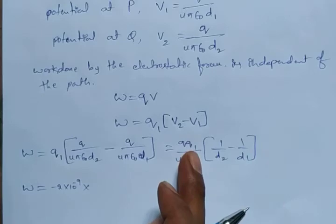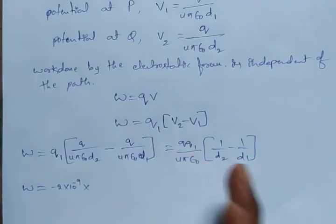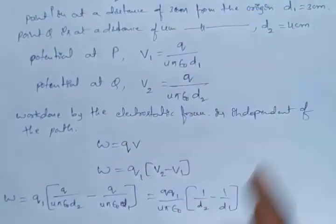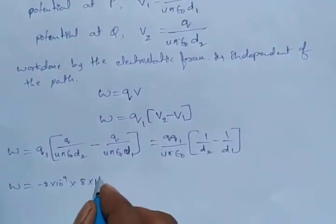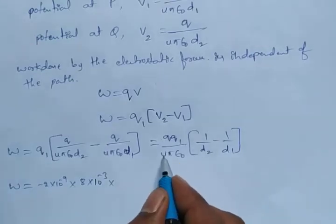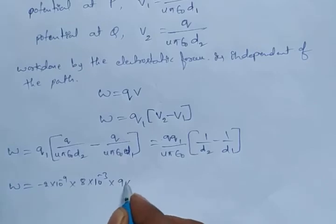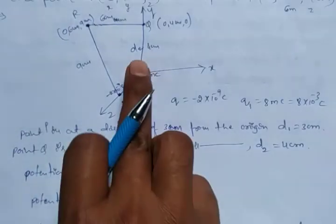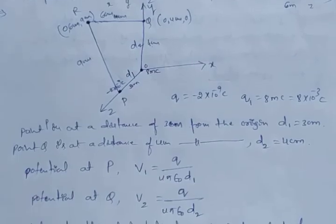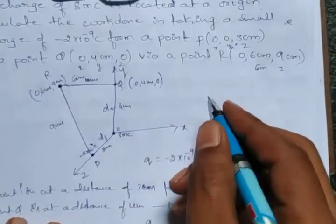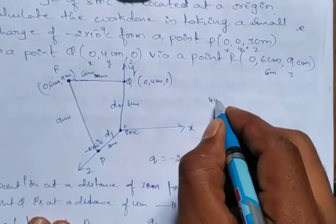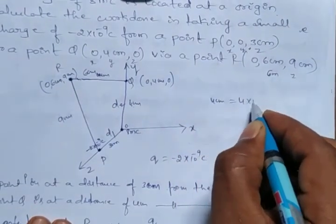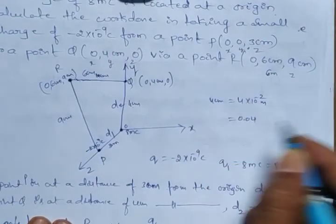Now substitute the values. Work done equals Q1 into [Q by 4 pi epsilon-zero into D2 minus Q by 4 pi epsilon-zero into D1], which simplifies to Q1 into Q by 4 pi epsilon-zero into (1/D2 minus 1/D1). Here Q is minus 2 into 10 power minus 9 Coulombs, and Q1 is 8 milliCoulombs, that is 8 into 10 power minus 3 Coulombs. The value of 1 by 4 pi epsilon-zero is 9 into 10 power 9. D2 is 4 centimeters, which is 0.04 meters.